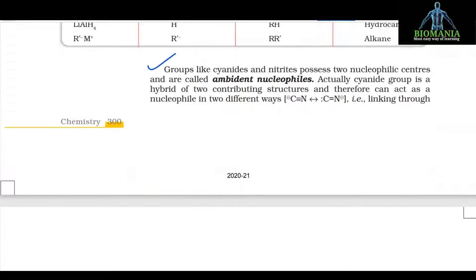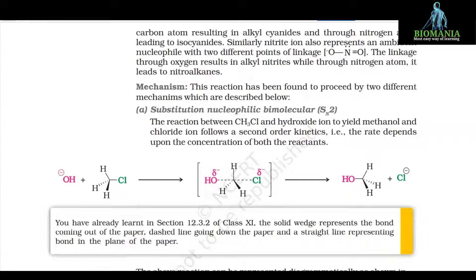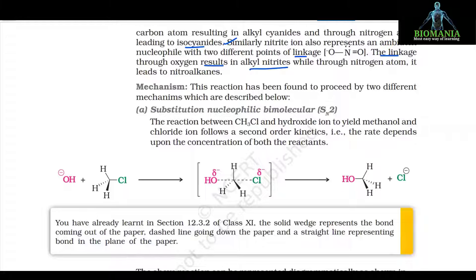Groups like cyanides and nitrites possess two nucleophilic centers and are called ambident nucleophiles. The cyanide group is a hybrid of two contributing structures and can act as a nucleophile in two different ways: linking through the carbon atom resulting in alkyl cyanides, and through the nitrogen atom leading to isocyanides. Similarly, the nitrite ion also represents an ambident nucleophile. Linkage through oxygen results in alkyl nitrites, while through the nitrogen atom it leads to nitroalkanes.